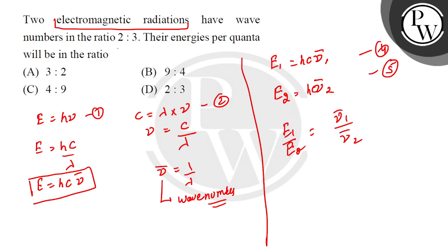Now here, the two radiations, the wave number, its ratio is already 2 by 3. 2 by 3. 2 is to 3 means 2 by 3. So what will the energy per quanta be? 2 is to 3. I hope you understood this question. Thank you.